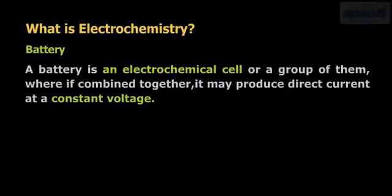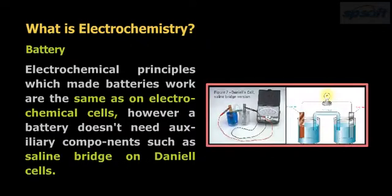Battery: A battery is an electrochemical cell or a group of them where, if combined together, it may produce direct current at a constant voltage. Electrochemical principles which make batteries work are the same as on electrochemical cells.